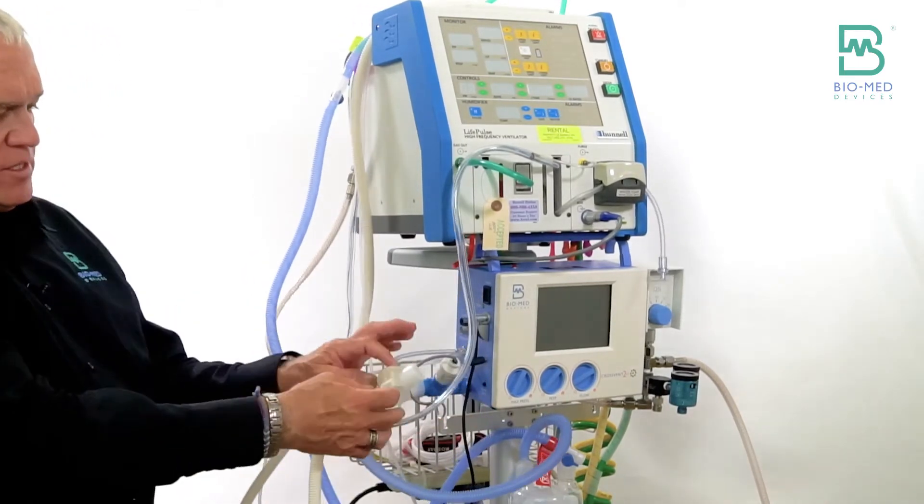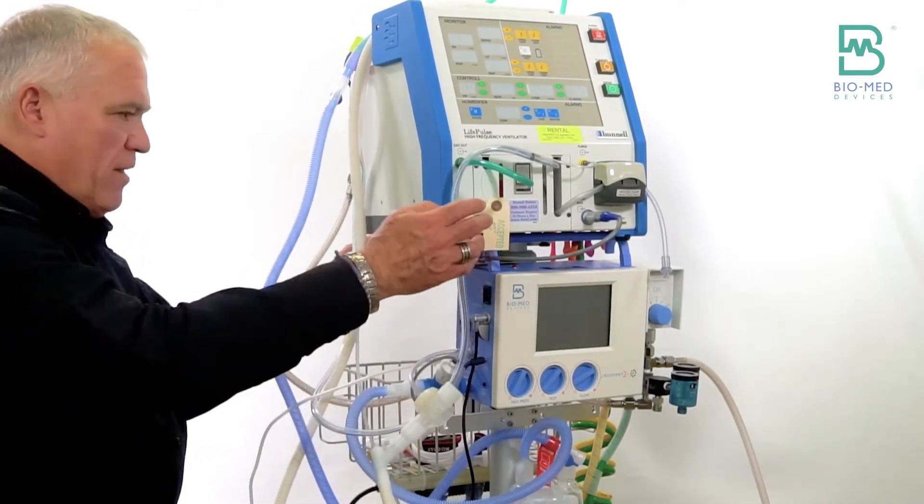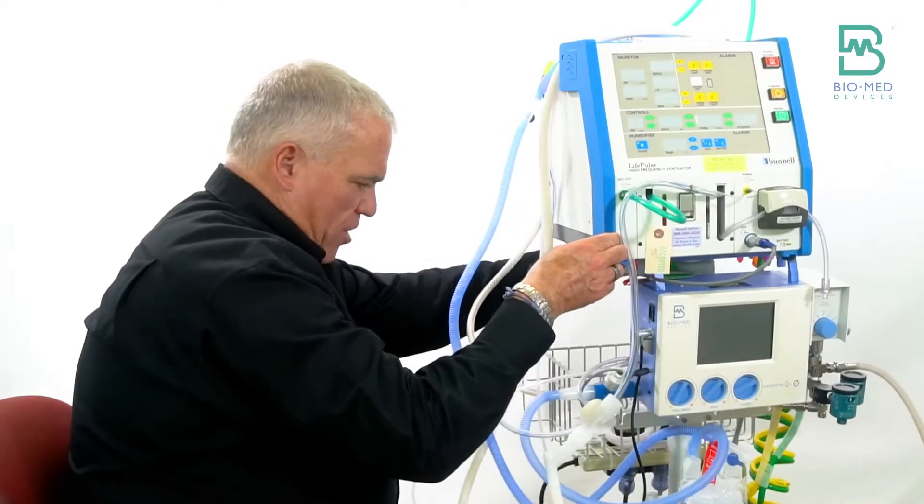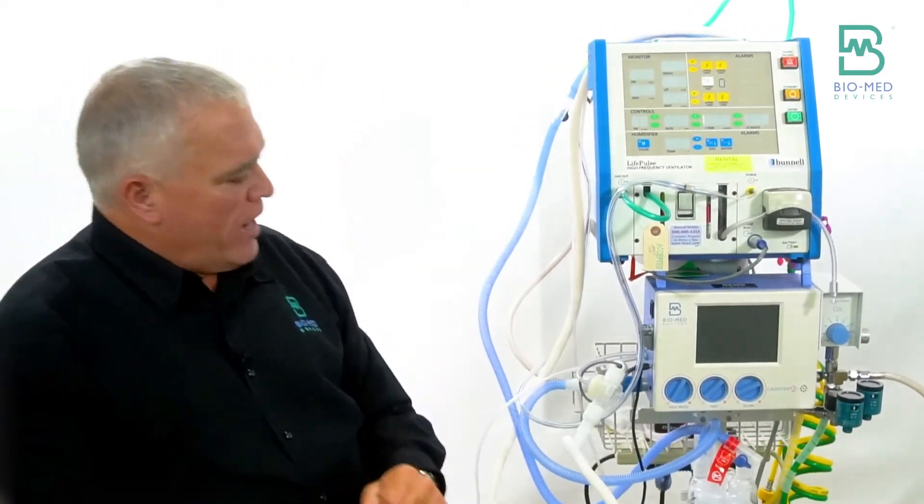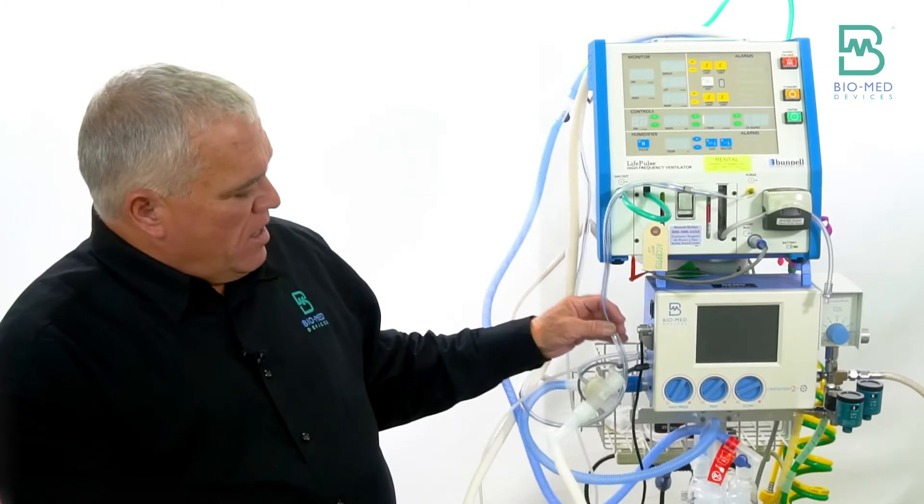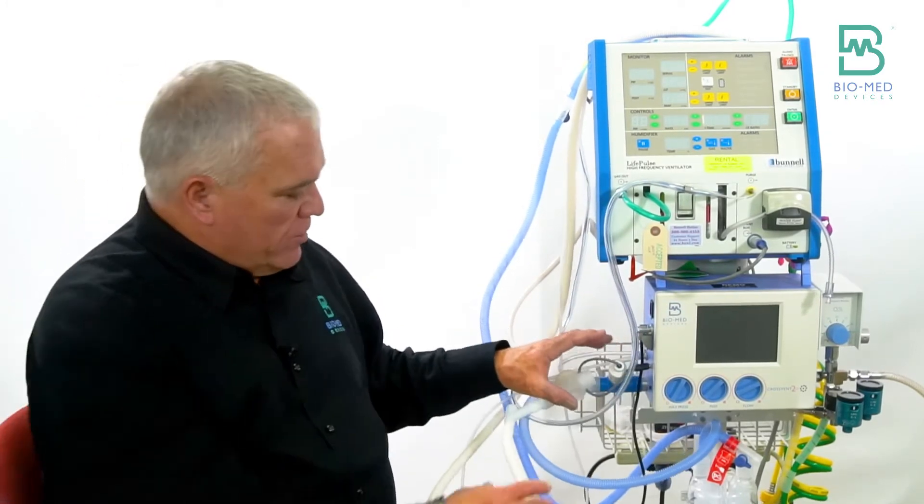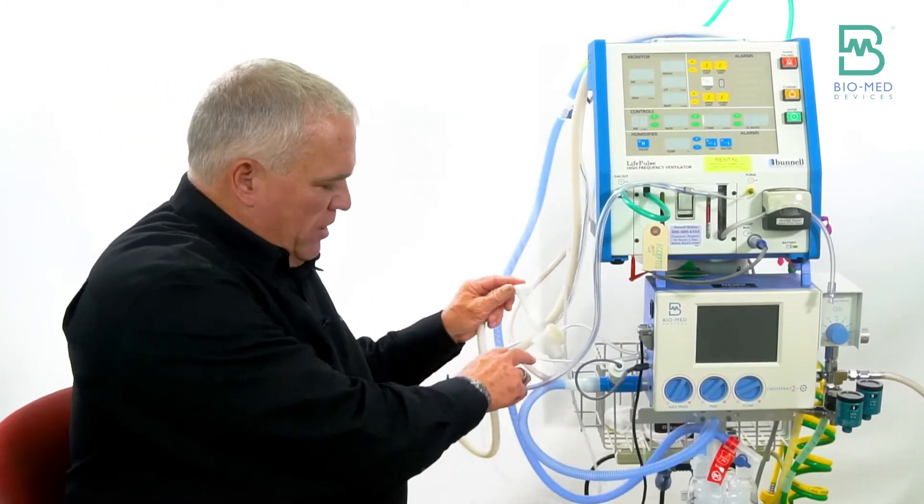We sell these in a kit. They come 20 per case. Part number is 2018D so that you can convert your heated wire circuit.